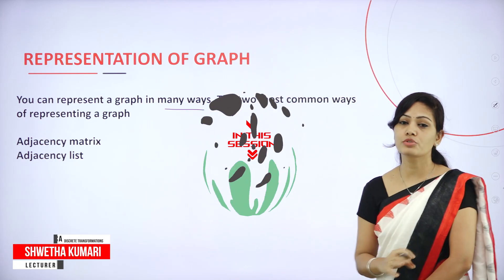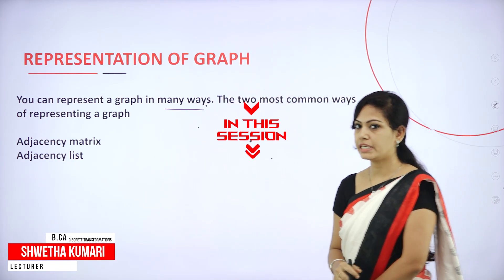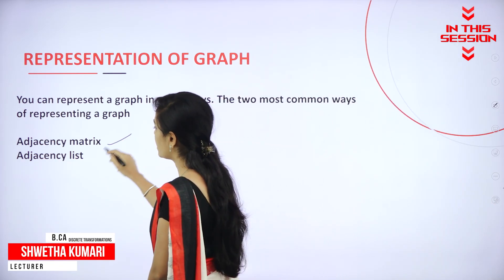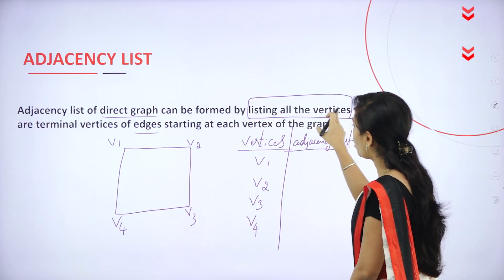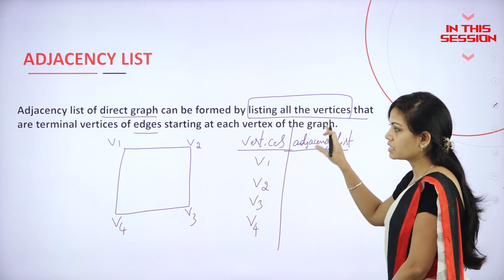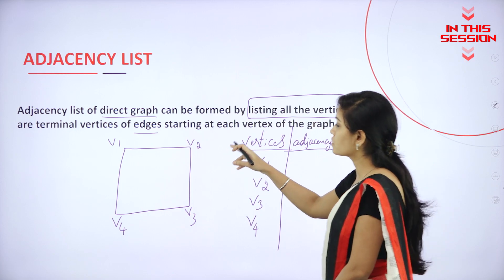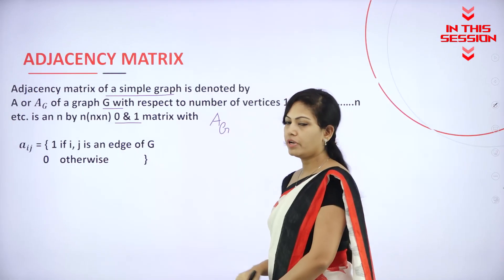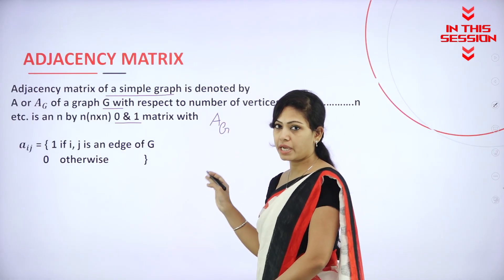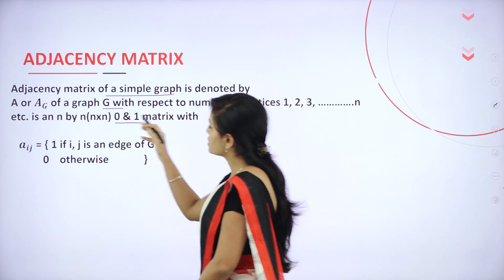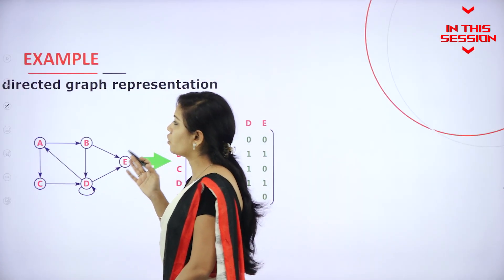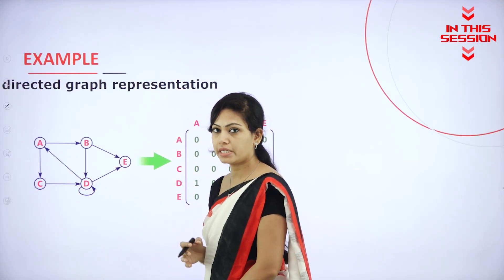The two most common ways of representing a graph are adjacency matrix and adjacency list, listing all the vertices that are terminal vertices of edges. We represent the adjacency matrix by 0 and 1. A digraph is also called a directed graph.